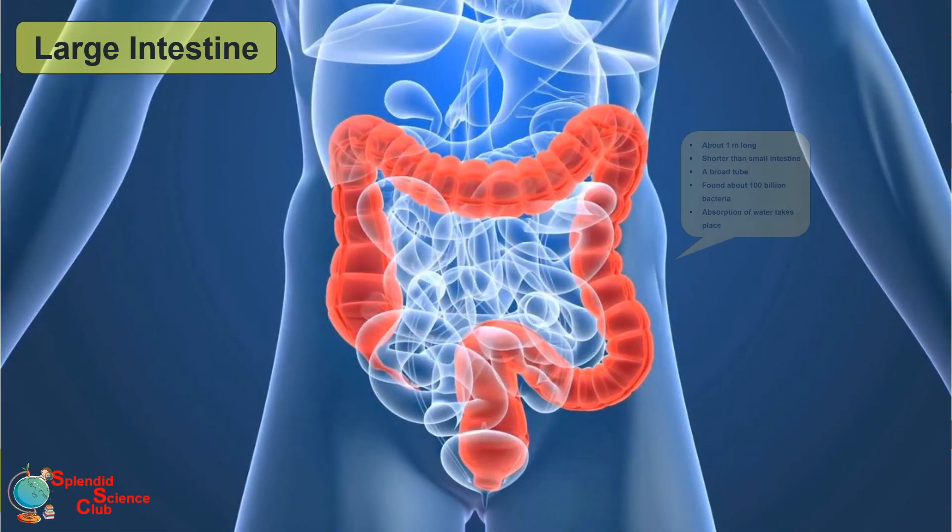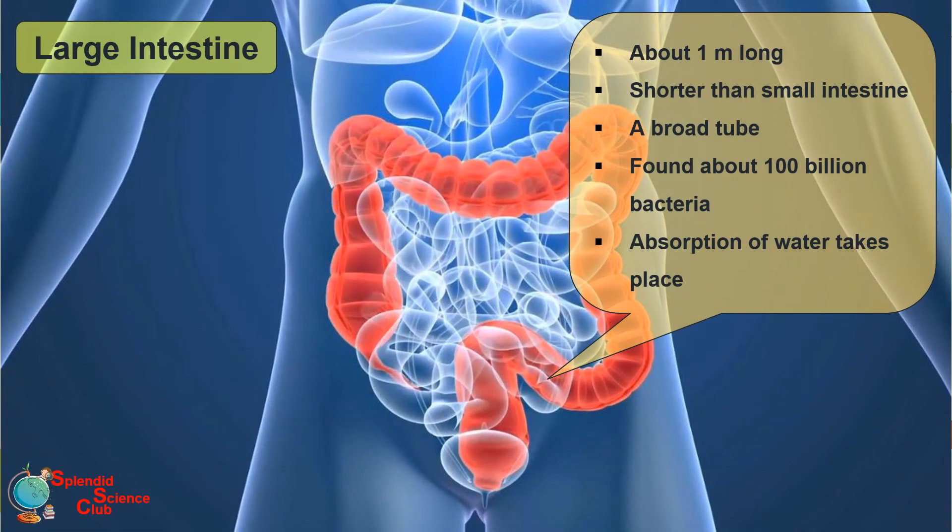The large intestine is about 1 meter long. It is a broad tube and contains nearly 100 billion bacteria. Mainly the absorption of water takes place there. The lower end of the large intestine forms the rectum and anus, and undigested parts are removed as feces through the anus.